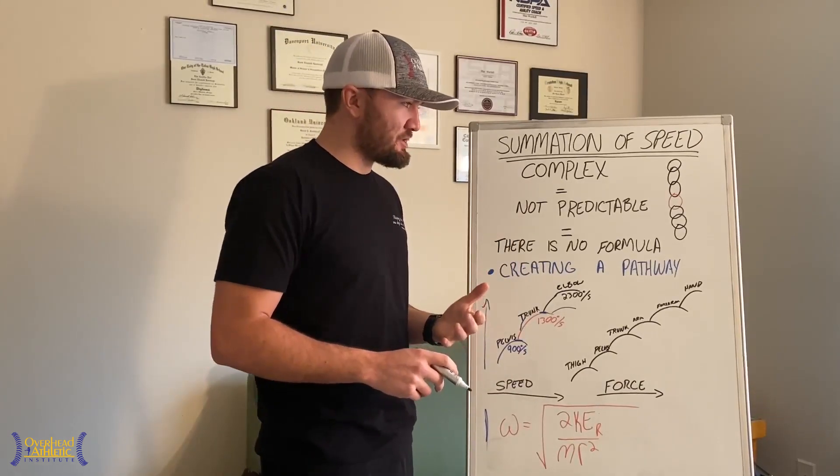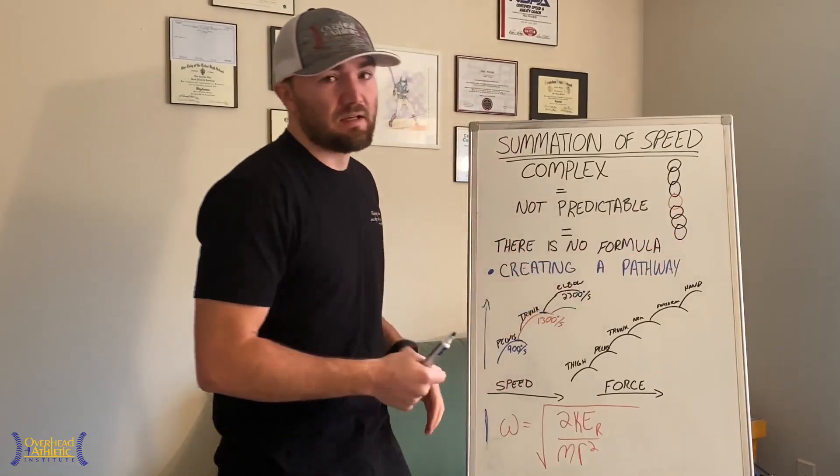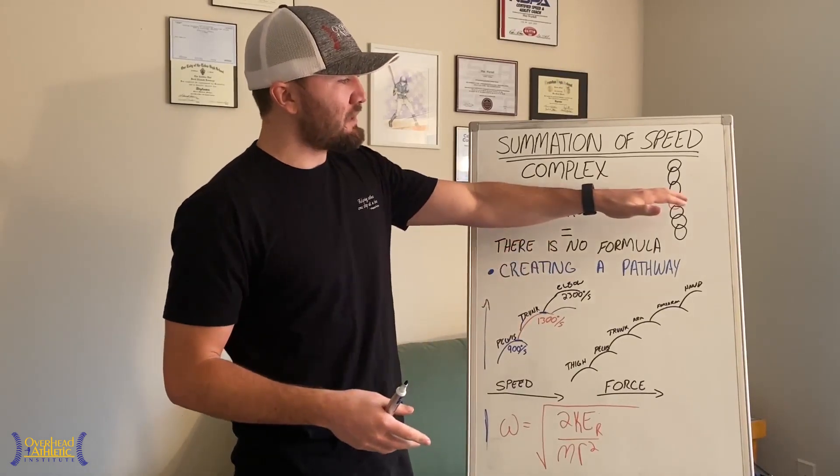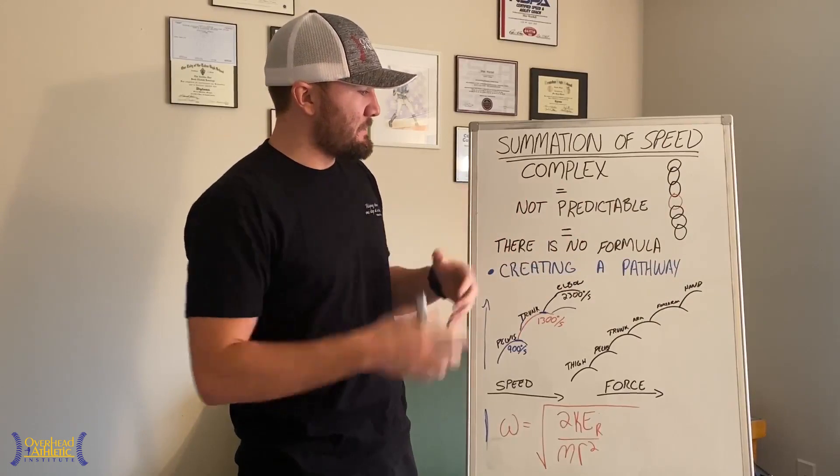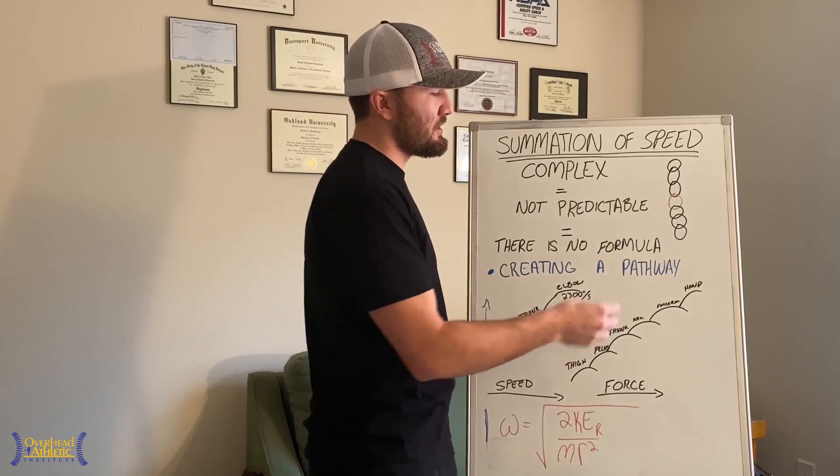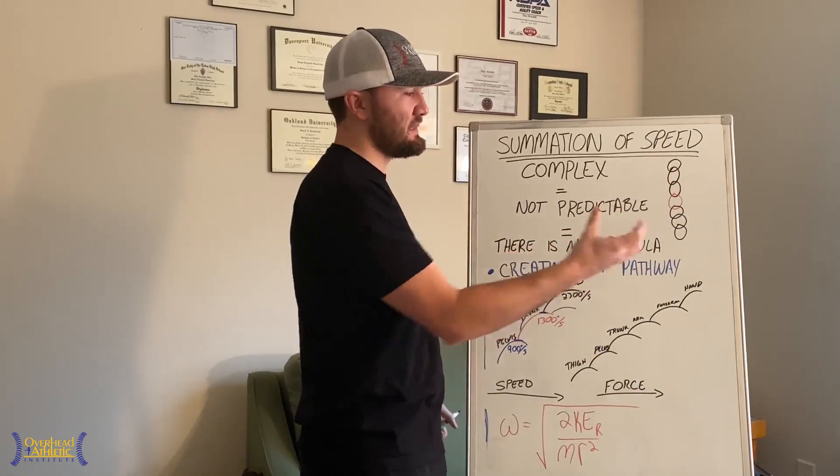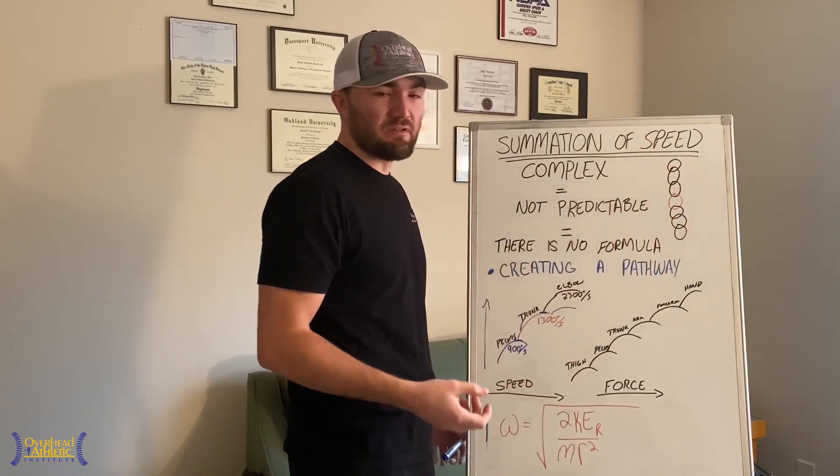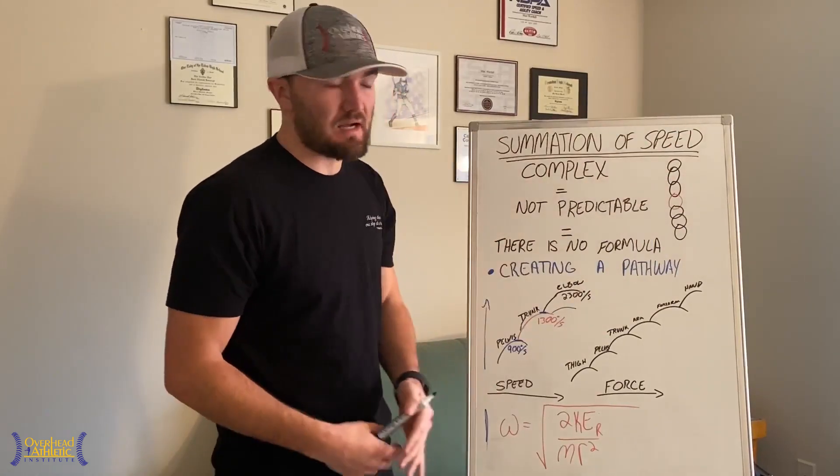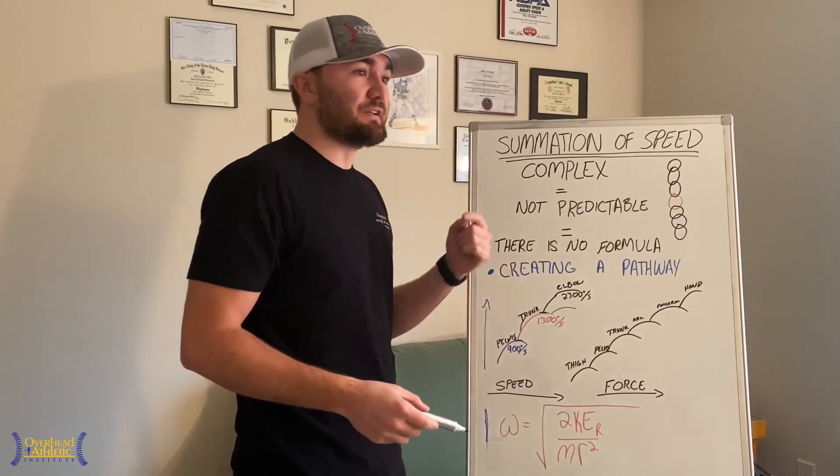That brings us to the next point: what if we have a weak link in the kinetic chain? If there's a weak link, we're not going to transfer energy through that link very well. We need to have a symbiotic relationship of all the different elements in the chain. We also have to have enough stability, strength, and capacity in each segment or link so that energy can flow through it and move on to the more distal or higher up segments.